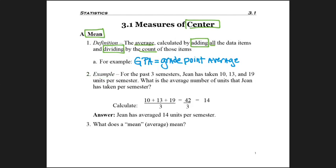So let's go ahead and look at this example here. This says for the past three semesters, Gene has taken 10, 13, and 19 units each semester. What is the average or mean number of units that Gene has taken per semester?